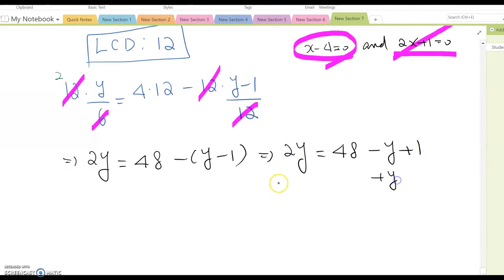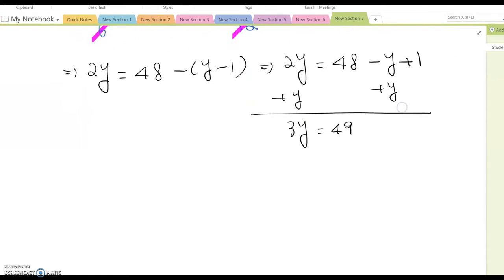So now it becomes 2y equal to 48 minus y plus 1. Combine y, gather the variable to one side, then 3y equal to 49. Last step, divide by 3, then y equal to 49 over 3.